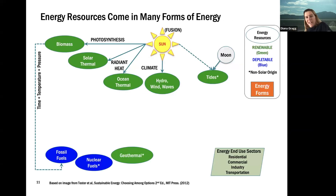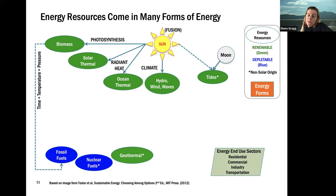We've got these energy resources that exist on our planet. The green ones are renewables; the blue are depletable resources — our fossil fuels and nuclear fuels. We want end-use services: heating, lighting, cold drinks, and so on. Let's talk about the forms of energy our resources are in, and how we convert them into useful forms for the energy services we need.